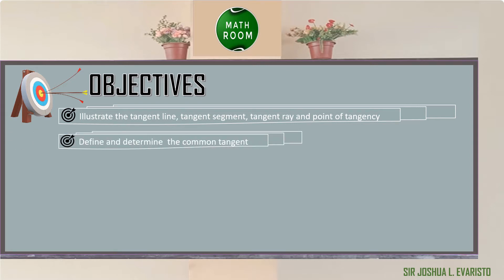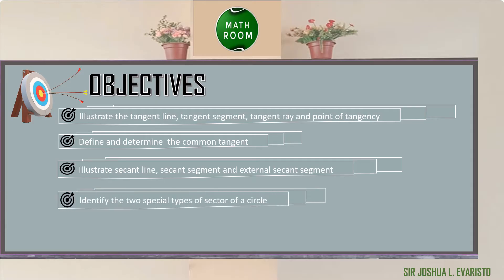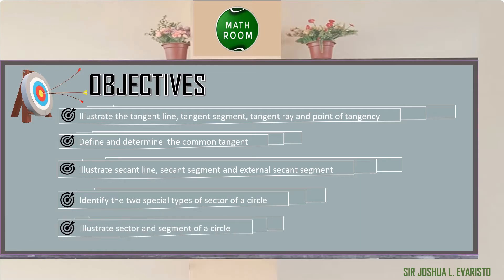Define and determine the common tangent. Illustrate secant line, secant segment, and external secant segment. Identify the two special types of sector of a circle. Illustrate sector and segment of a circle.